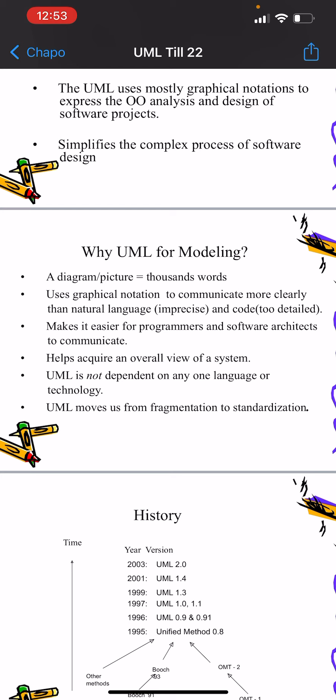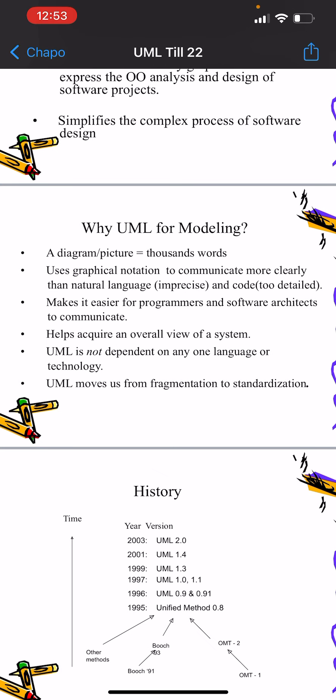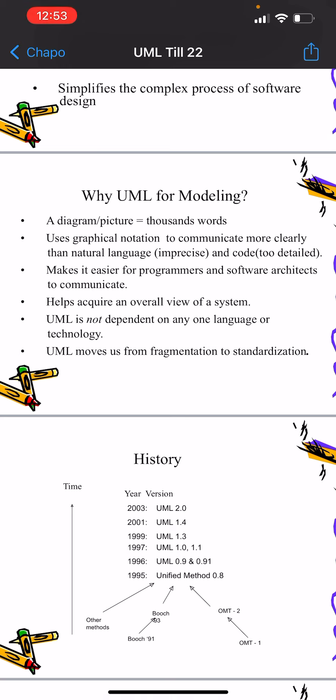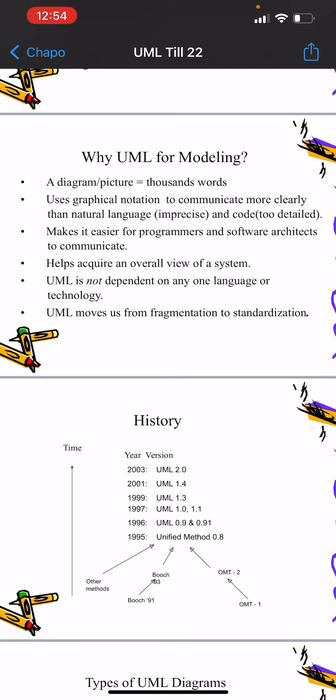For example, if you create a class diagram, the classes, data attributes, and details are easily understandable. UML makes it easier for programmers and software architects to communicate. It's very easy to communicate between a software modeler, software architect, and a person who is doing programming with the help of UML modeling. UML helps acquire an overall view of the system.